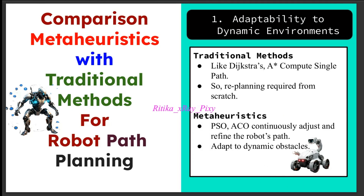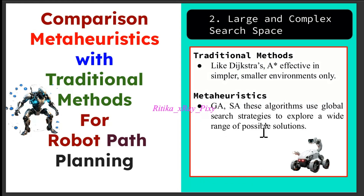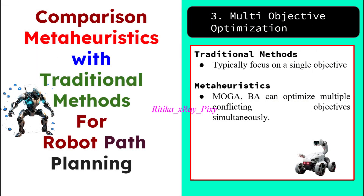We can use algorithms like PSO and ACO to adjust and refine the robot's path based on environmental changes, as these algorithms can adapt to dynamic obstacles and ensure the robot avoids collisions and reaches its destination safely. When dealing with complex search spaces, traditional methods are less suitable for large-scale problems and become computationally expensive. Algorithms like genetic algorithms and simulated annealing can handle large, complex environments using global strategies to explore a wide range of possible solutions and efficiently escape local optima.